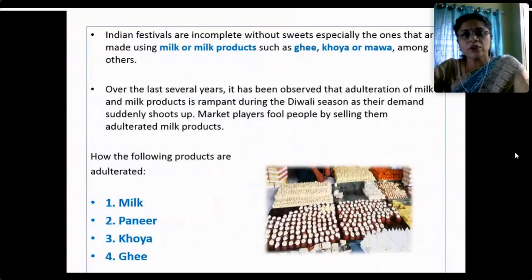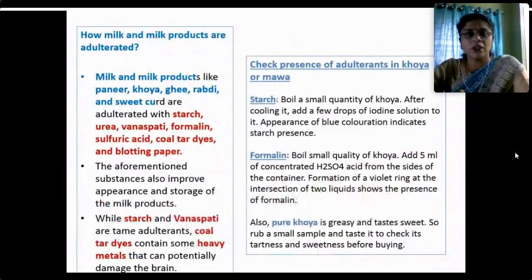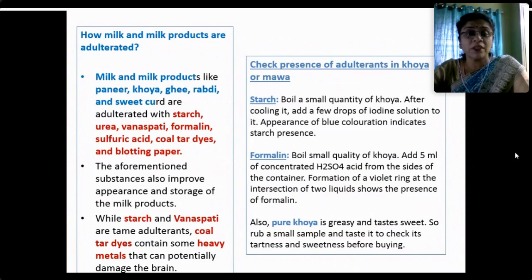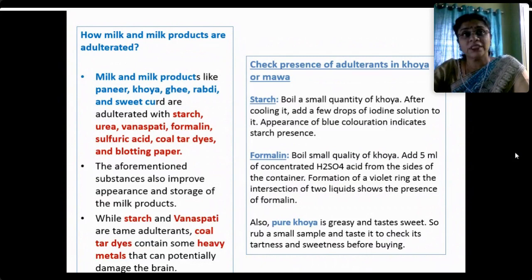Milk and milk products like paneer, khoya, ghee, rabdi and sweet curd are adulterated with starch, dalda, vanaspati, formalin, sulfuric acid, coal tar dyes and blotting paper. These substances improve the appearance and storage of milk products but cause great compromise to the health of consumers. While starch and vanaspati are relatively tame adulterants, coal tar dyes contain heavy metals that can potentially damage the brain and lead to diseases like cancer.